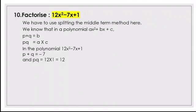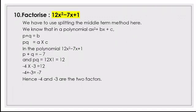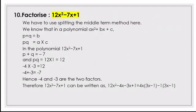Since we need the product to be positive 12 and the sum to be -7, we take -4 and -3: (-4) × (-3) = 12 and (-4) + (-3) = -7. So we split the middle term and rewrite: 12x² - 7x + 1 = 12x² - 4x - 3x + 1. Now we group and take common factors: from the first group 12x² - 4x, take out 4x to get 4x(3x - 1).